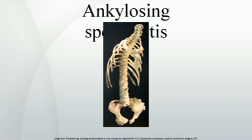Surgery: In severe cases of AS, surgery can be an option in the form of joint replacements, particularly in the knees and hips. Surgical correction is also possible for those with severe flexion deformities — severe downward curvature of the spine, particularly in the neck — although this procedure is considered very risky.